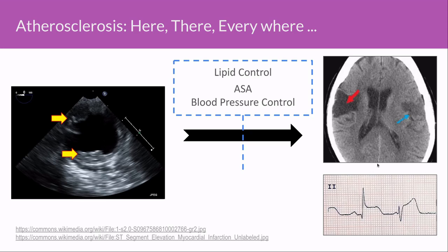Atheroma grade in the descending aorta is prognostically useful because atherosclerosis is a systemic disease. Significant atheromas in the descending aorta are highly correlated with atheromatous disease in the cerebrovascular system, the coronary artery system, and elsewhere in the arterial tree. We have significant means for potentially mitigating these risks in patients if they are adequately worked up.